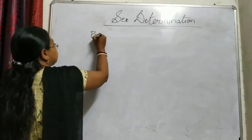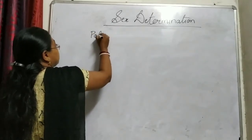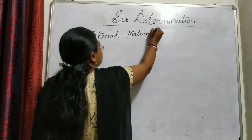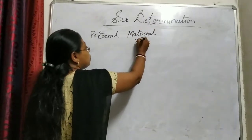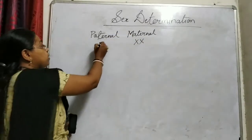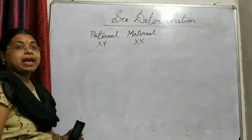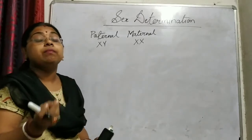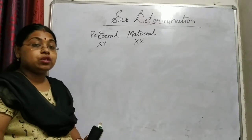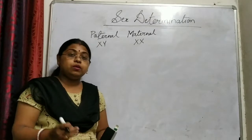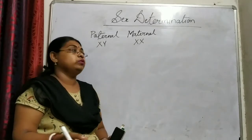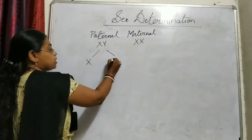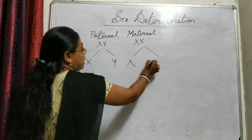Paternal means father and maternal means mother. The mother has a genetic constituent of XX, whereas the father has a genetic constituent of XY. We know two types of cell division: mitosis and meiosis. Meiotic cell division gives rise to haploid number, whereas mitotic gives rise to the same set of chromosomes. These two processes form gametes — the father will form X and Y gametes, and the mother will form X and X.